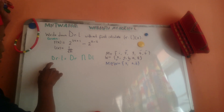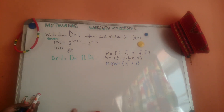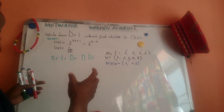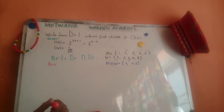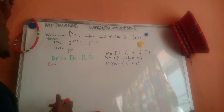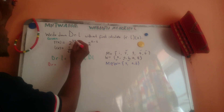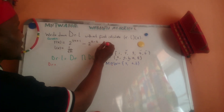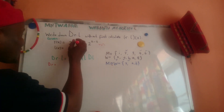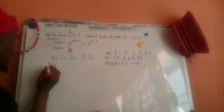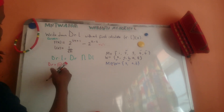So when you say domain of f times g, it means domain of f intersected with domain of g. If I know the domain of f and the domain of g, I check where they intersect. So let me find the domain of f. My f is an exponential function. For an exponential function, every real number works — you can plug any number and it will work. So the domain of any exponential function is all real numbers.